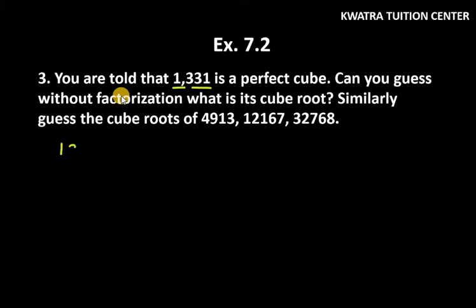First of all, let's learn to do 1331. Start with step 1: we have to mark them in 3-3 pairs. If we start with 3-3 pairs from the right, one group is 331 and the remaining part is just 1. So we have 2 groups: 331 and 1.